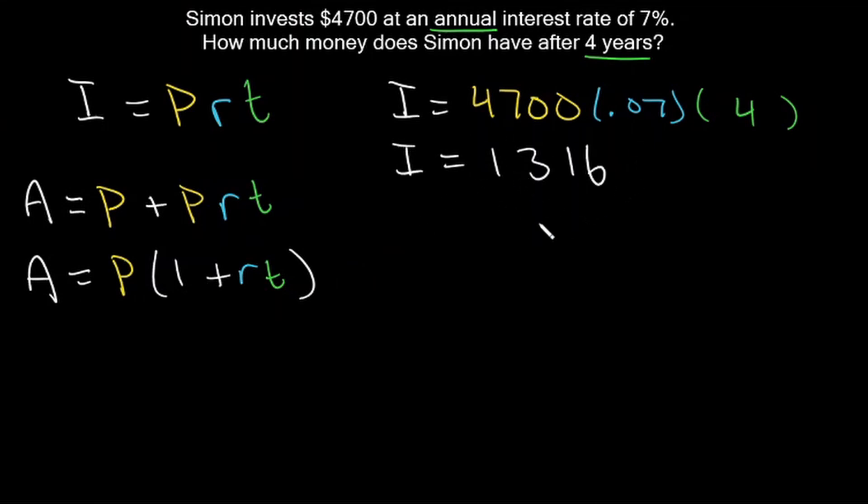So we have our interest here, which is $1,316. To calculate our total amount A, we add 1,316 and our principal 4,700. That's going to be equal to $6,016. So after 4 years, Simon has $6,016.